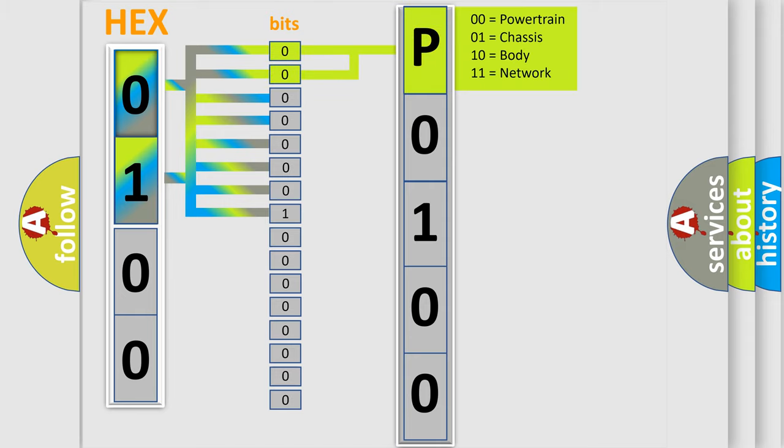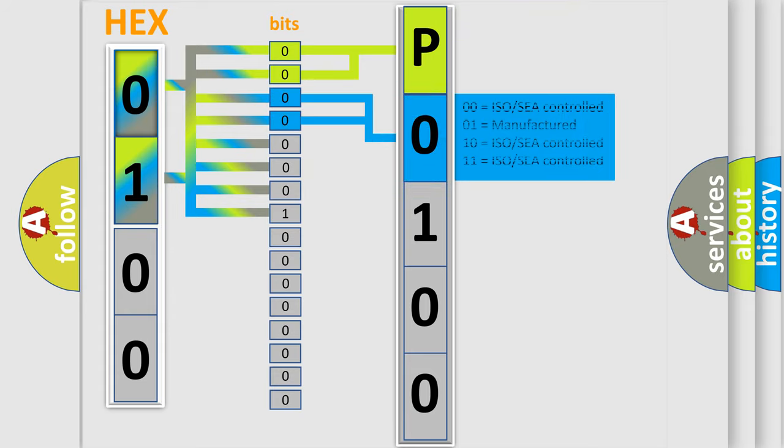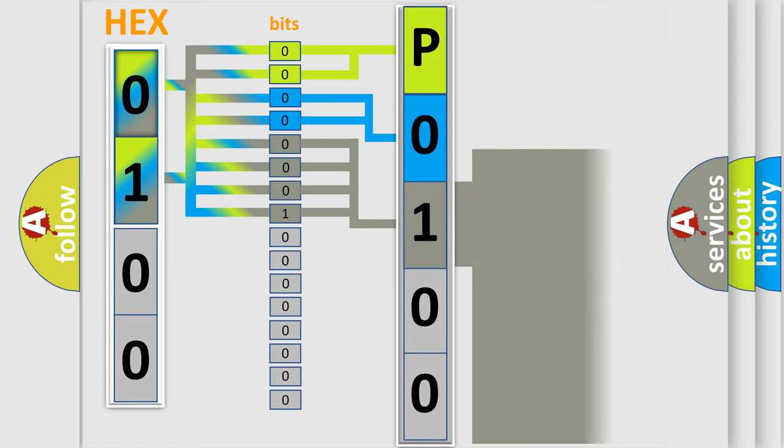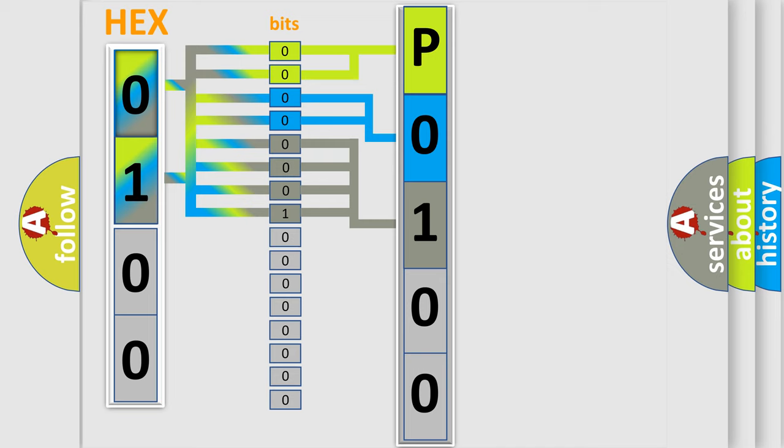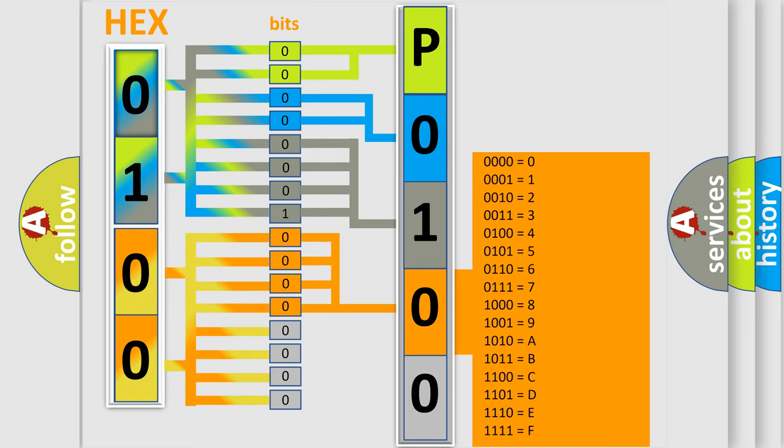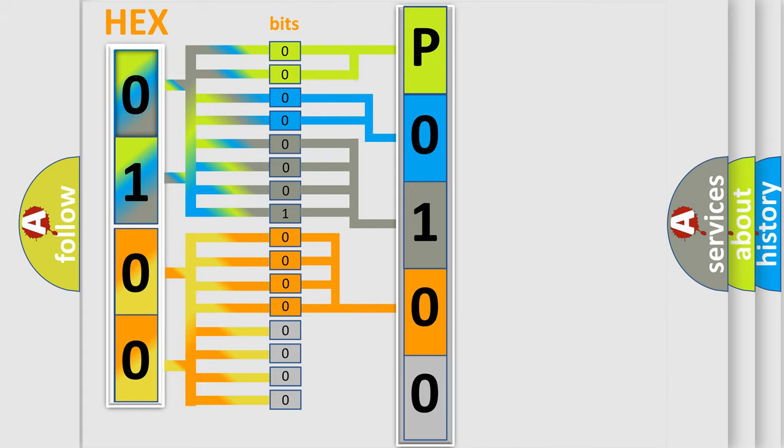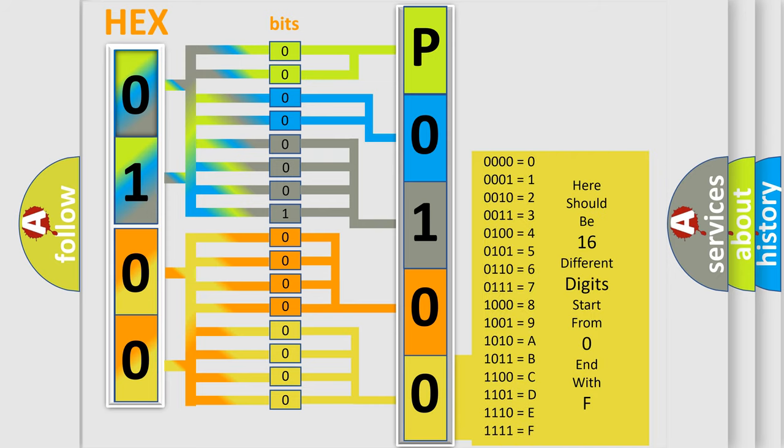By combining the first two bits, the basic character of the error code is expressed. The next two bits determine the second character. The last bit styles of the first byte define the third character of the code. The second byte is composed of eight bits. The first four bits determine the fourth character, and the last four bits define the fifth character. A single byte conceals 256 possible combinations.